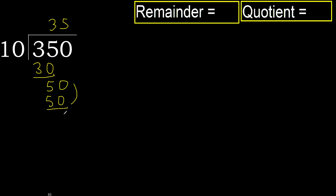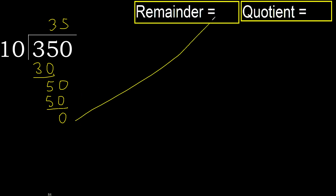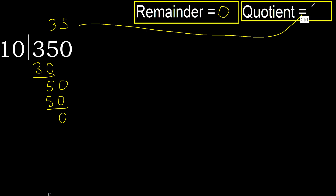50 is not greater, subtract. There is no next number, therefore finish. 350 divided by 10 is 35.